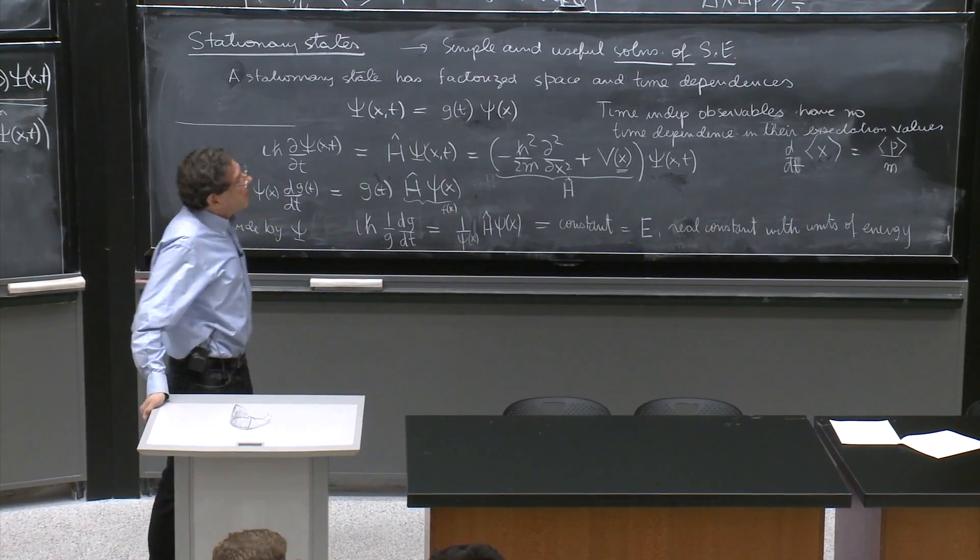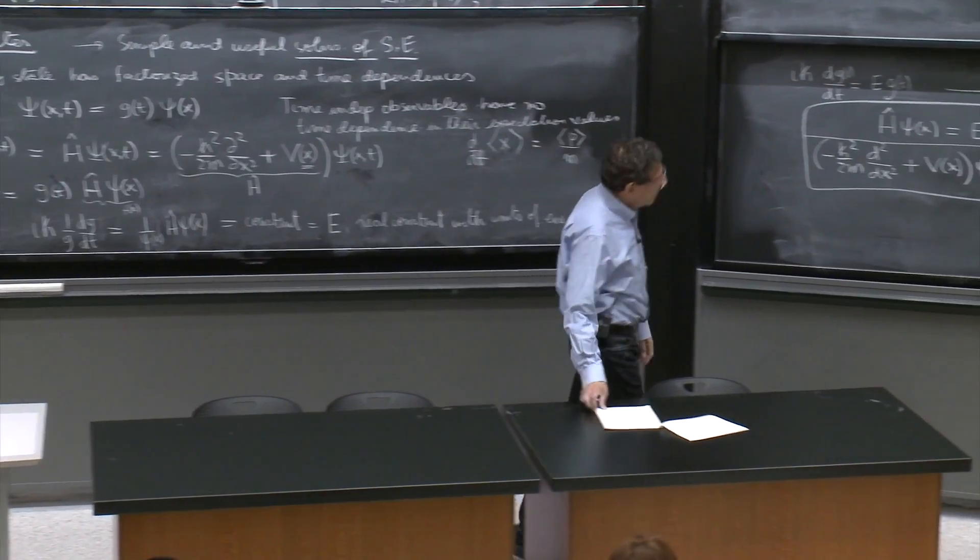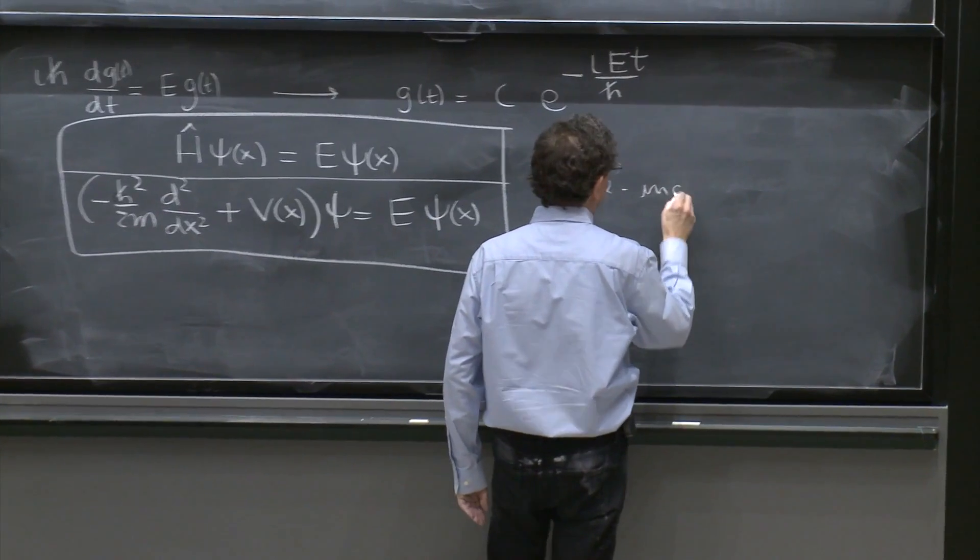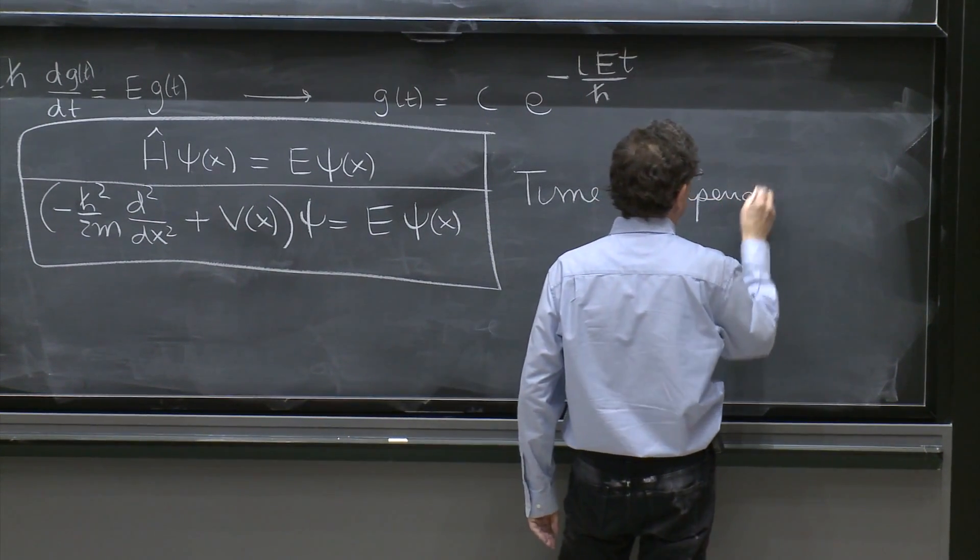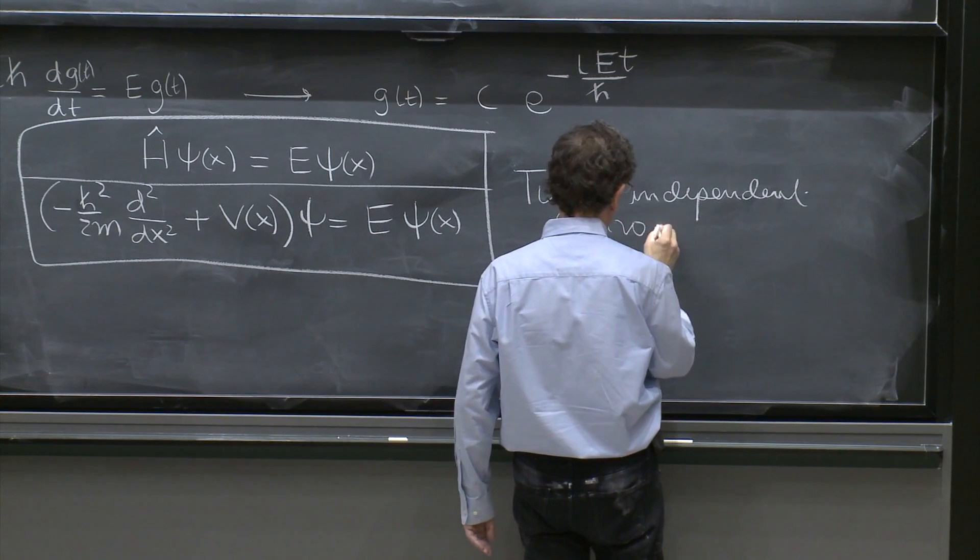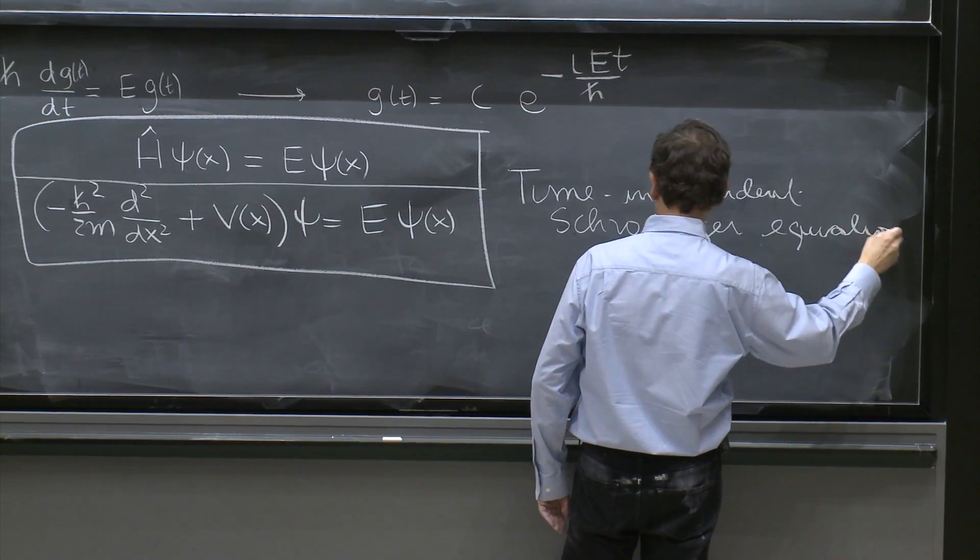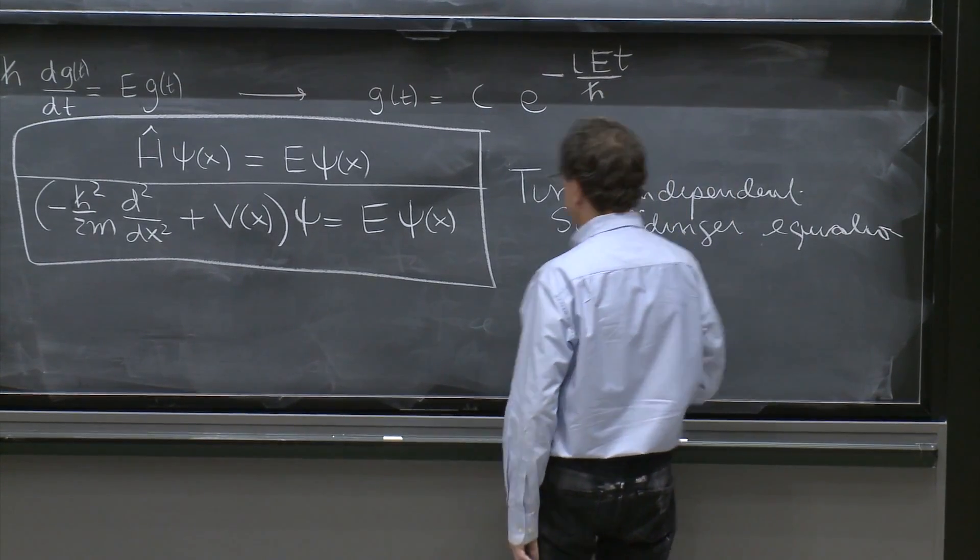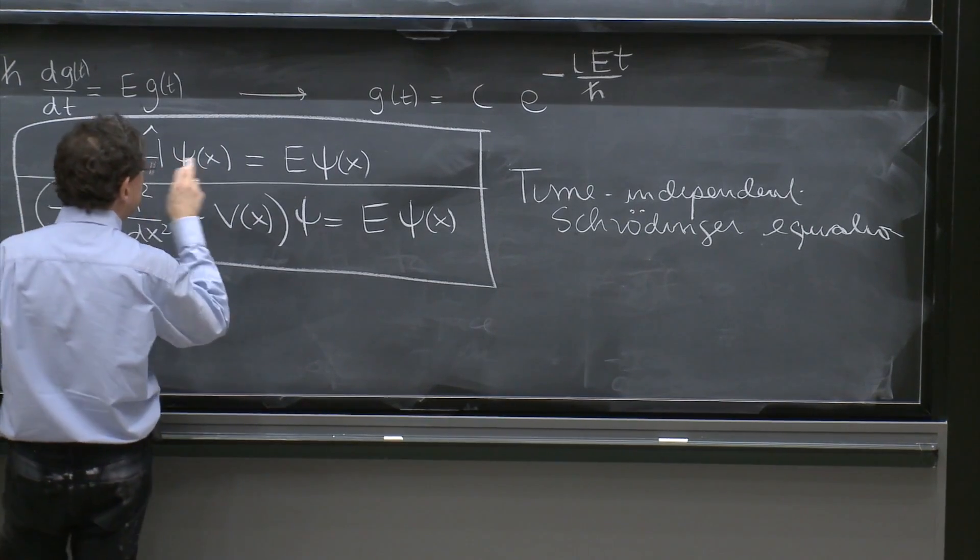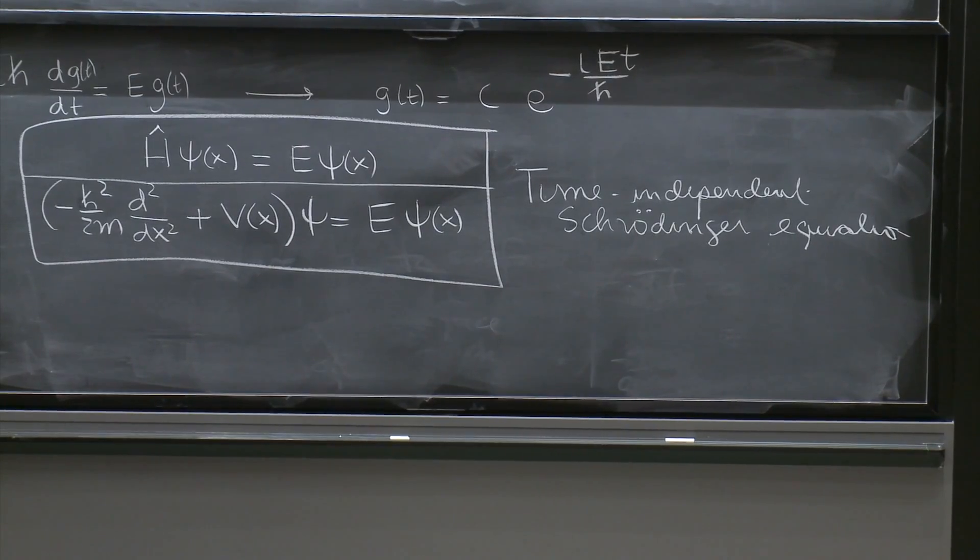So, many people, most people, call this the time independent Schrödinger equation. So, that's the time independent Schrödinger equation, or H-hat psi equal E psi.